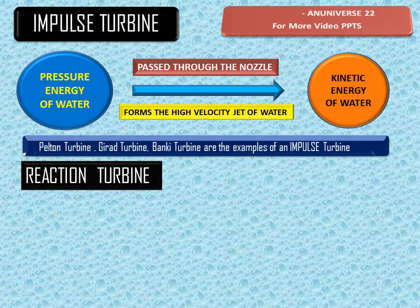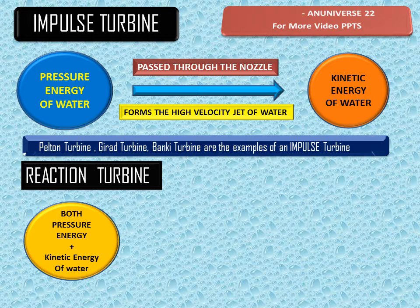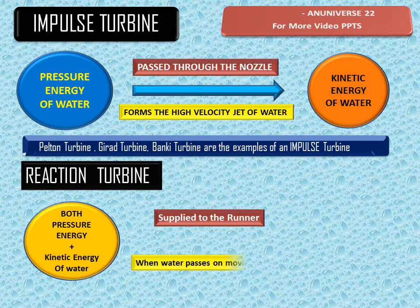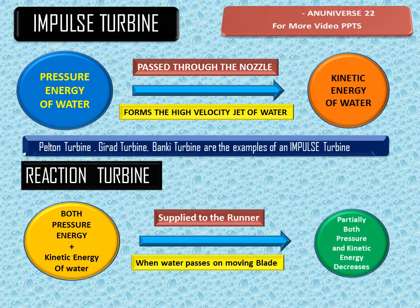In a reaction turbine, both pressure energy and kinetic energy are available at the inlet of the turbine. When this pressure plus kinetic energy is supplied to the runner and passes over the moving blades, both energies available at the inlet are partially converted — there is a partial change in both kinetic and pressure energy.